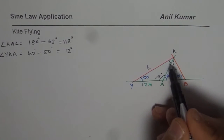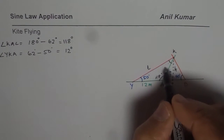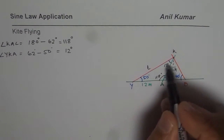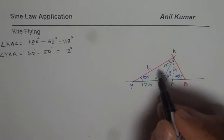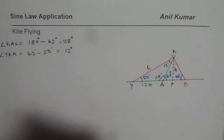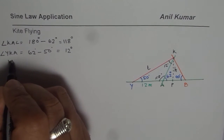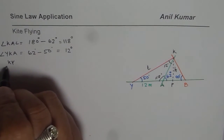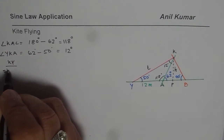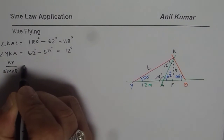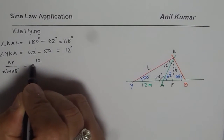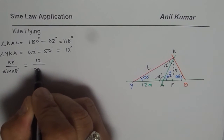Now you know a combination of an angle — 12 degrees — and the side opposite to it, which helps you find the length of the string. Since you want to find length KY, we put KY on top: KY divided by sine of 118 degrees equals the known side of 12 meters divided by sine of 12 degrees.